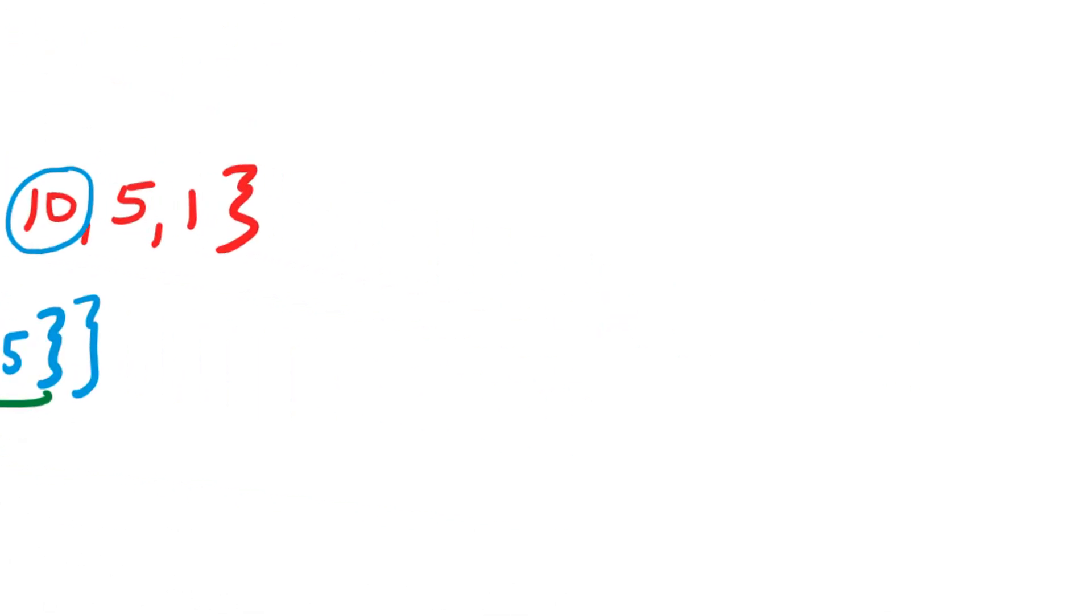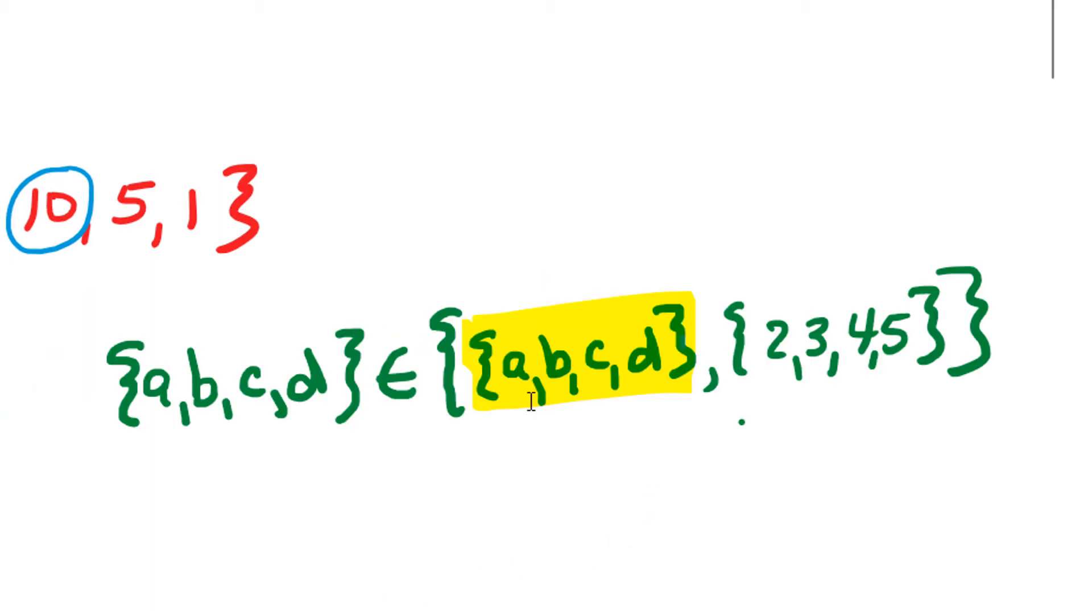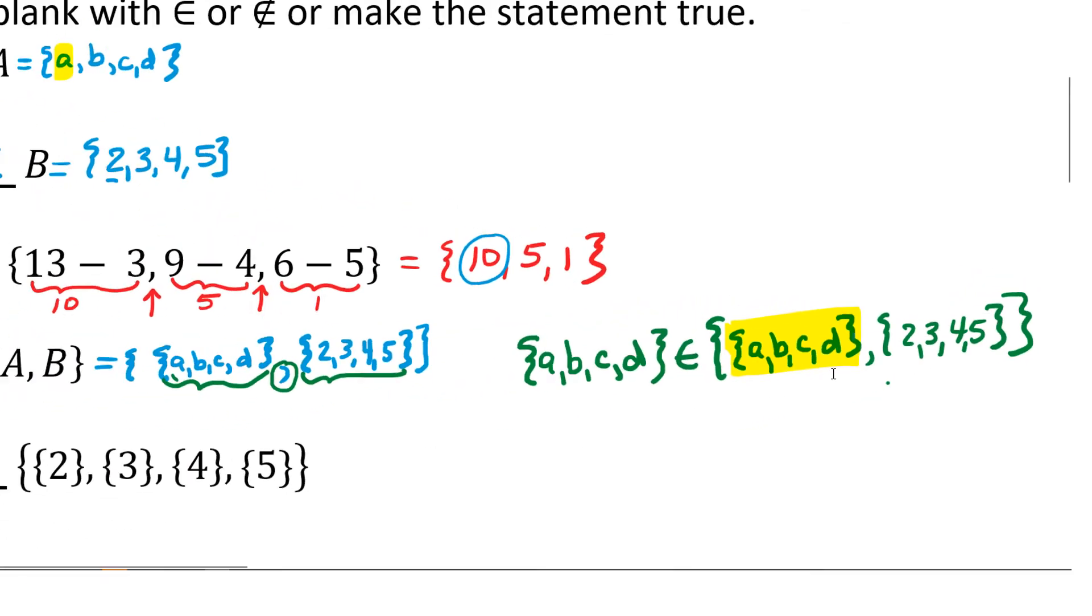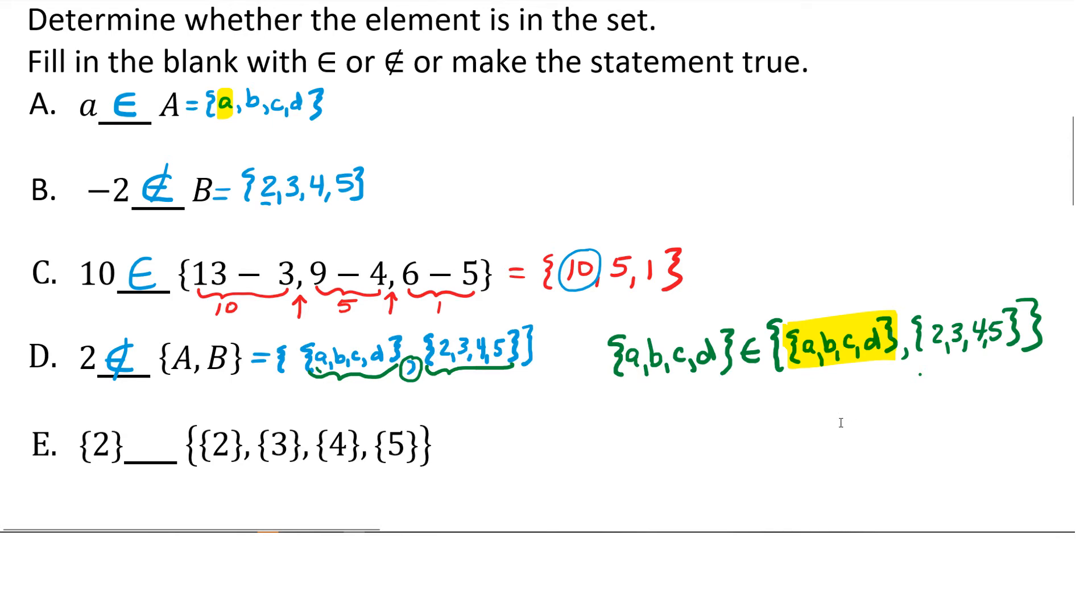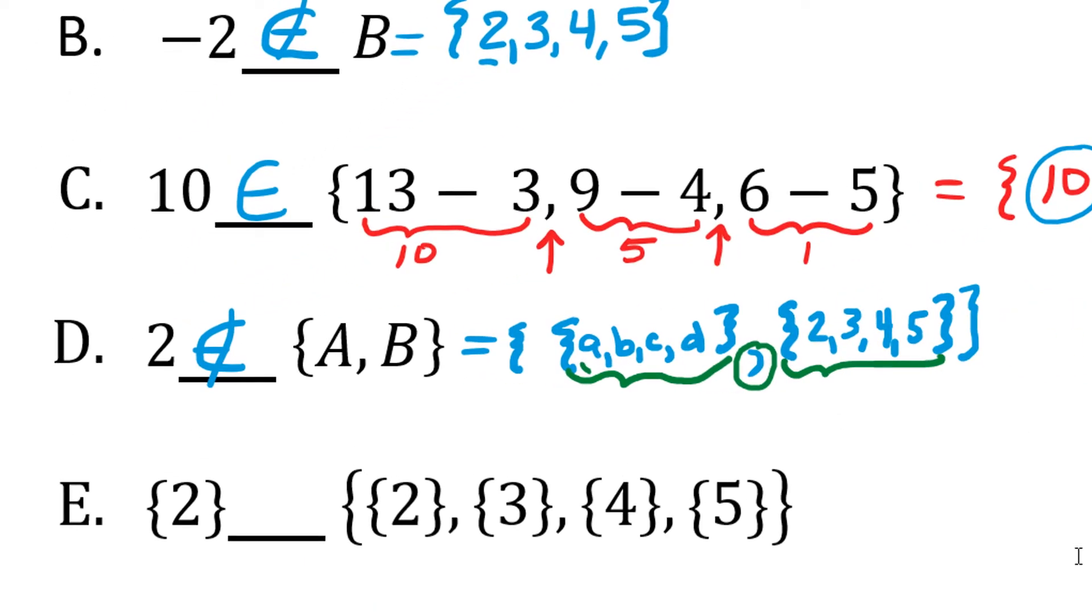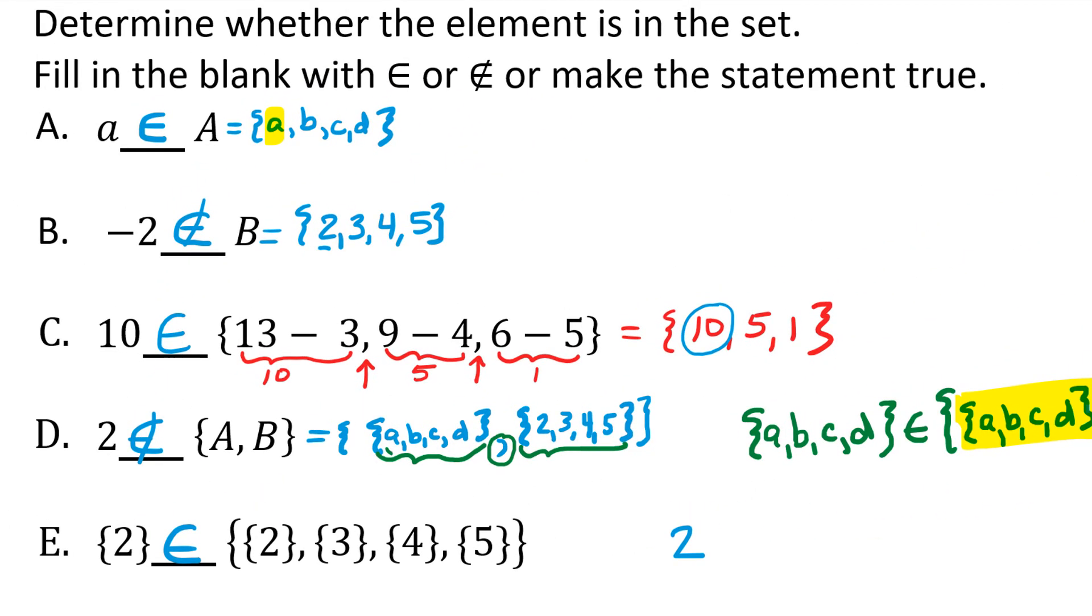Now it would have been true if I said that the set containing A, B, C, D is an element of the set containing the set A, B, C, D, and the set 2, 3, 4, 5. That would have been true. But 2 itself is not an element of that set. So what do you think about part E? We are asked if the set containing 2 is an element of the set containing the set containing 2, the set containing 3, the set containing 4, and the set containing 5. So if you said yes, you're correct. The set containing 2 is an element of this set. Now if I asked you if 2 were an element of this set, you would have to say no, it's not. Okay, the set containing 2 is an element of this set, but 2 itself is not.